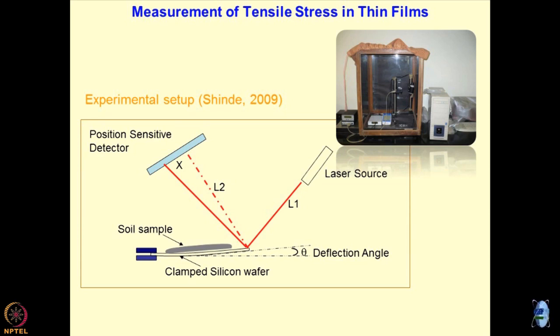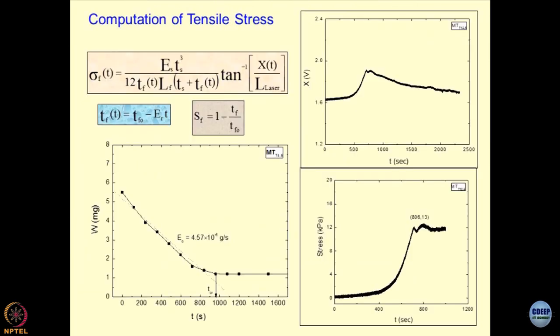So if I know that from the initial to the final state, the deflection in the beam is x, L1 and L2 are the geometrical parameters of the laser source and the detector, theta is the detection angle. I can interlink everything and I can obtain the sigma t as this function. So x upon L is nothing but theta term and I can find out what is the final thickness of the clay film if the initial is known and er is the evaporation rate multiplied by the time.